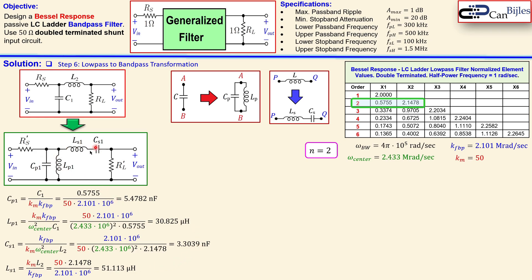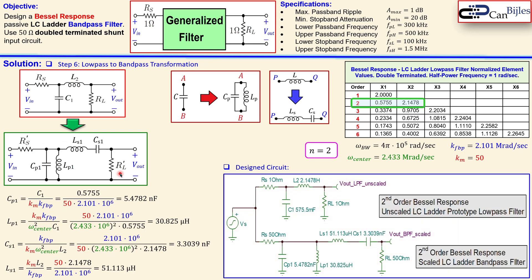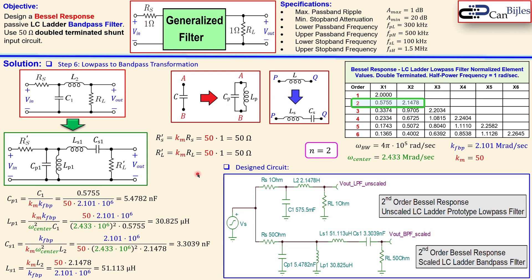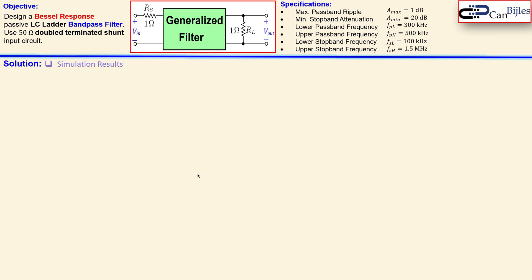We now have all component values for the capacitors and inductors. The source resistance Rs' and load resistance RL' are both scaled from 1 ohm to 50 ohm due to the impedance scaling factor km = 50. This is the final bandpass filter circuit designed using this transformation. The prototype low-pass filter has been transformed to the bandpass filter configuration with 50-ohm terminations.